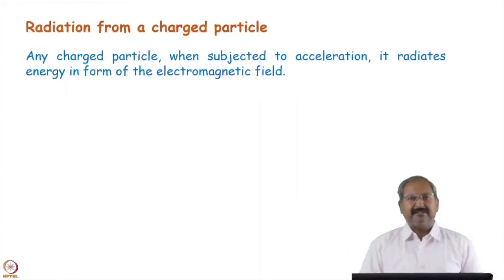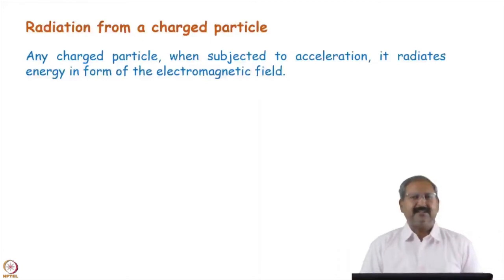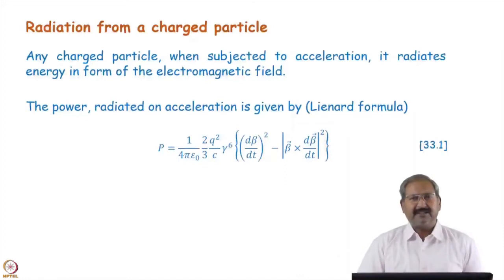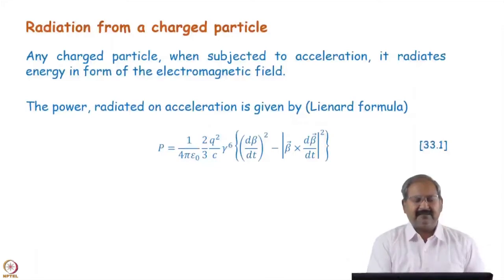Any charged particle, when subjected to some kind of acceleration, emits electromagnetic radiation — an electromagnetic wave is generated on the acceleration of charged particles. Using basic electromagnetic theory, we can obtain the power radiated by a charged particle when it is subjected to some acceleration. This is the Larmor formula for the power.